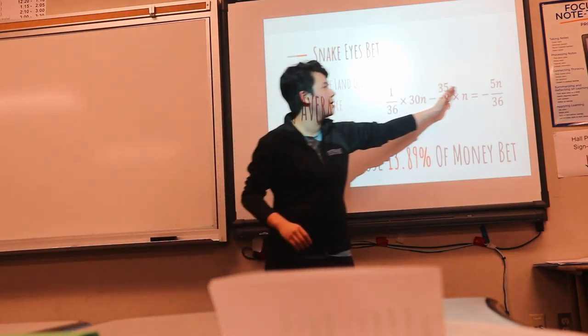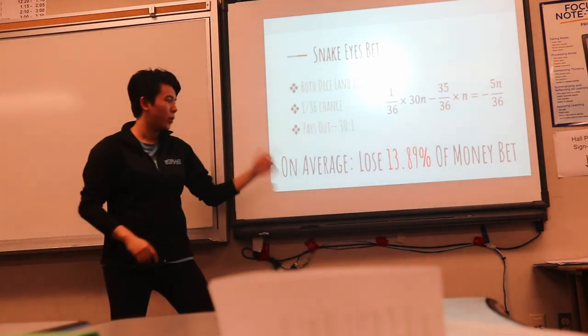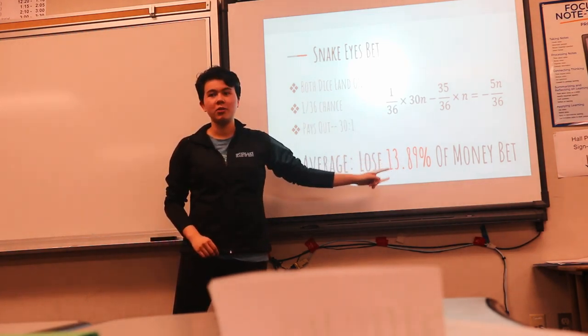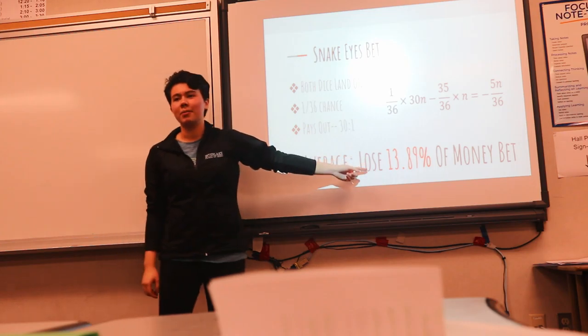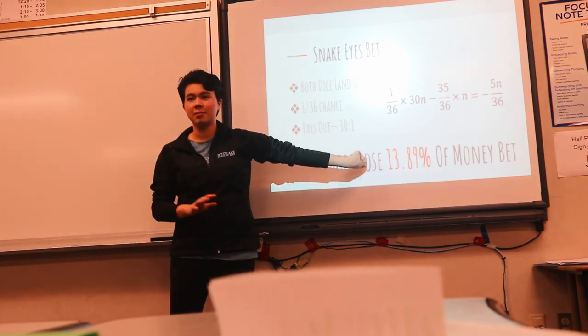When you add these up, the expected value is negative 5n over 36, which is 13.89% of your money. So if you basically play this game non-stop, you're going to lose money no matter what. It's about gambling, please do not do this bet.